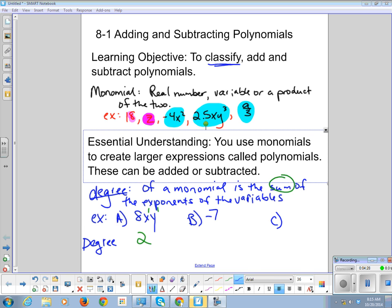So if I have negative 7y to the 4th z, the degree of y is 4, the degree of z is 1. 4 plus 1 is a big fat 5.